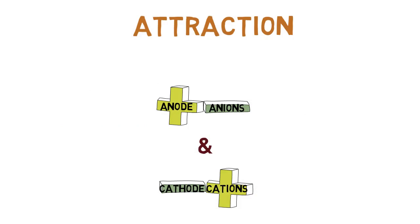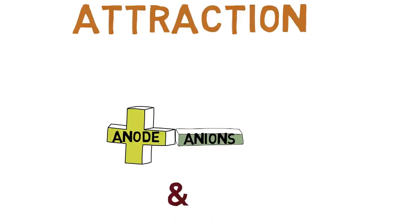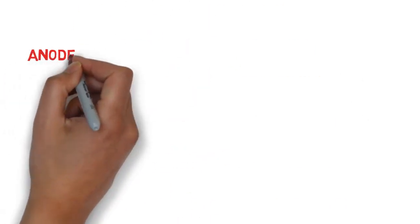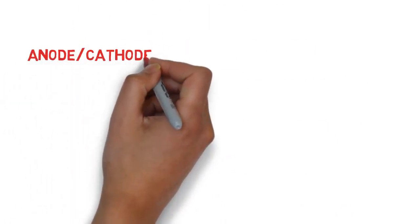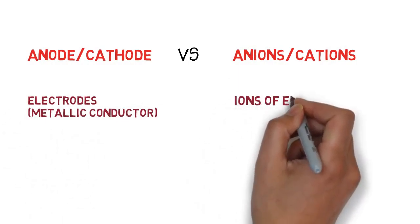Why do we use two different terms - anode, cathode and anions, cations? Is there any difference between these terms? Anode and cathode are electrodes whereas anions and cations are ions of electrolyte.